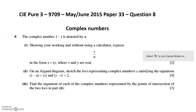Kia ora Year 12. This is a complex numbers question from the Cambridge A-Level paper from May-June 2015. It's got three parts to it. The first bit is an algebraic part, and then we've got some locus stuff to do.